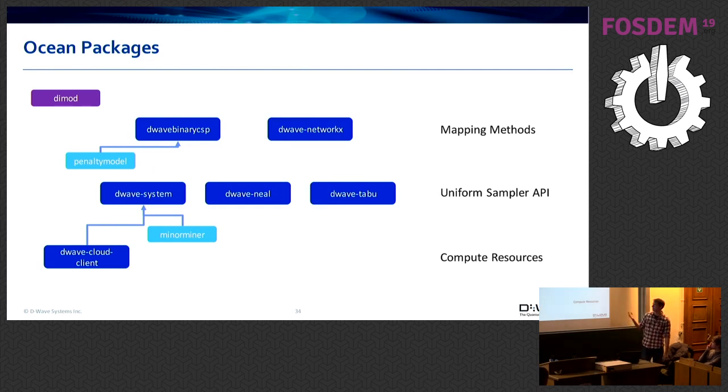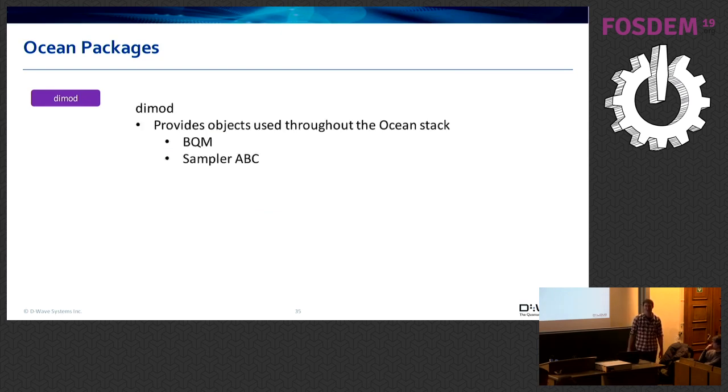So this is what the Ocean stack looks like. Our ecosystem, the Ocean SDK, actually includes a large number of packages. So the first package that you need to know something about is called DIMOD. That stands for discrete models. Everyone always asks what it stands for, but I'm not supposed to say that because that actually kind of is a meaningless word. But basically what this thing does is it provides an object that represents your BQM, your abstract problem. And it also defines an API that samplers are supposed to have.